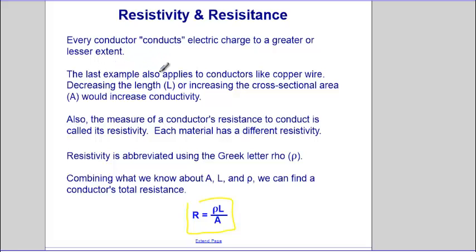The last example also applies to conductors like copper wire. If we decrease the length or increase the cross-sectional area, we would increase the conductivity, thus decreasing the resistivity. So increased conductivity is the same as decreasing resistivity.